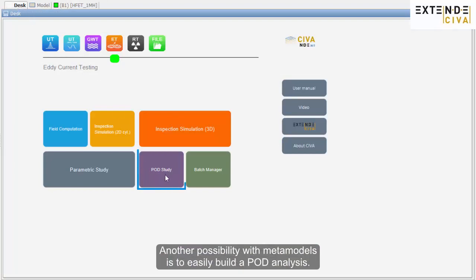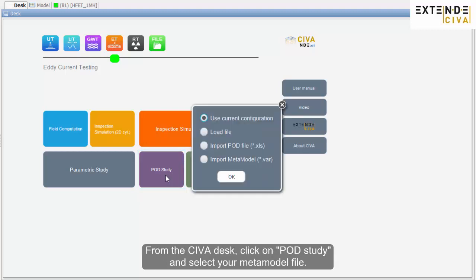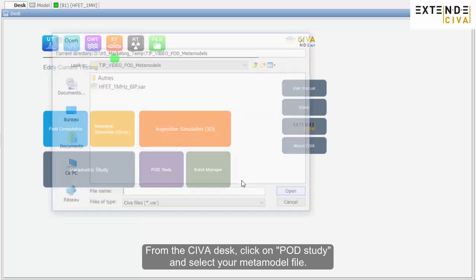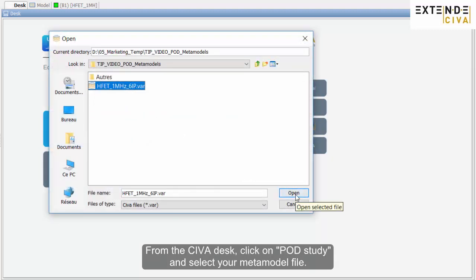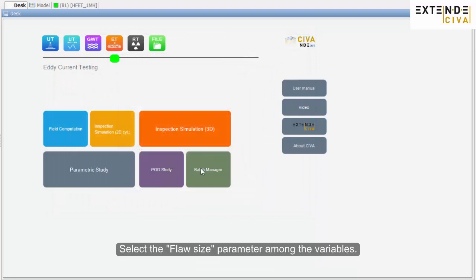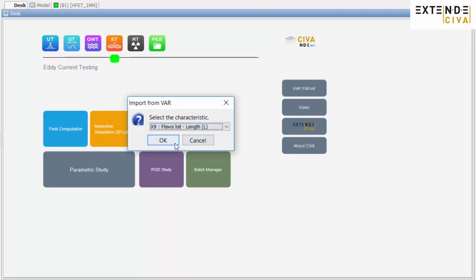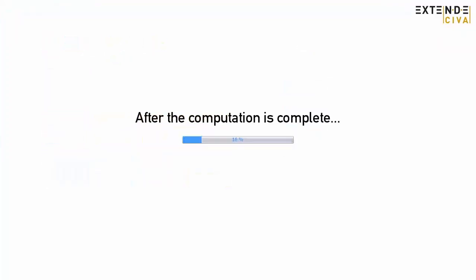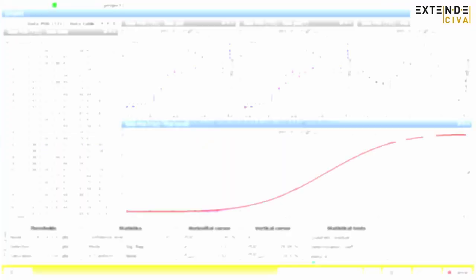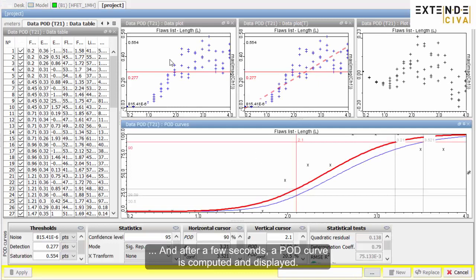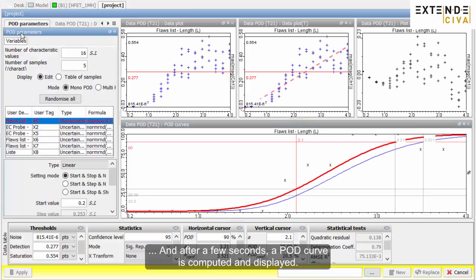Another possibility with metamodels is to easily build a POD analysis. From the CIVA desk, click on POD study and select your metamodel file. Select the flaw size parameter among the variables. And after a few seconds, a POD curve is computed and displayed.